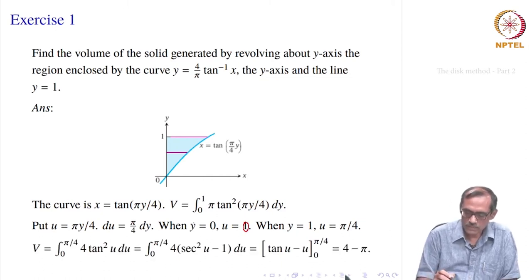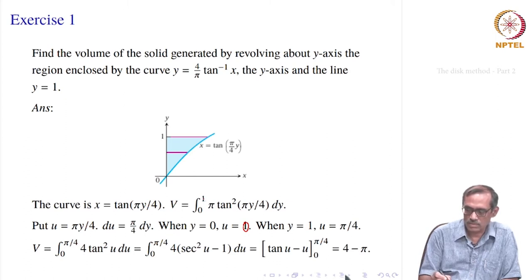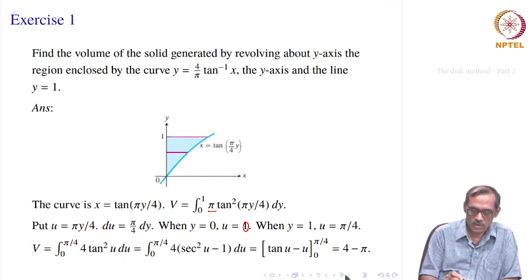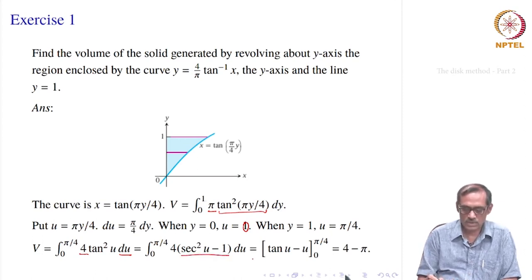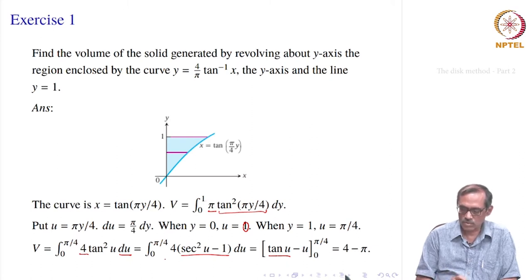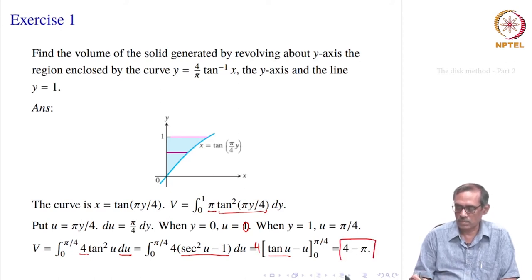So the volume becomes the integral from 0 to π/4 in terms of u. With dy = 4 du, we get 4π times the integral from 0 to π/4 of tan²(u) du, which equals 4π times the integral of (sec²u − 1) du. That gives 4π times [tan u − u] from 0 to π/4. Evaluating at the limits and simplifying gives the answer as 4 − π.